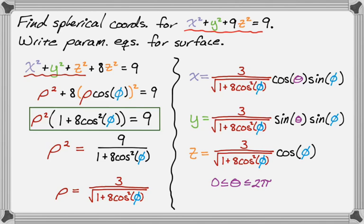And φ—we definitely want to get the entire ellipsoid, so we've got to go all the way from positive z down to negative z, which is from 0 to π. That's it. Those parametric equations, if we graph them, will give us the entire ellipsoid.